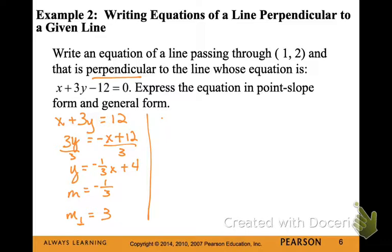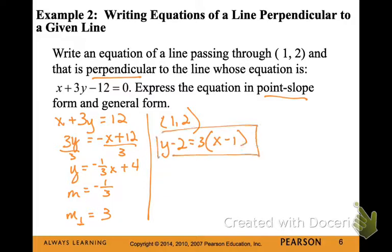Or I can just write that as positive 3. Now I have the slope, and I know that this will pass through the point (1, 2). So I can write my equation in point-slope form. And then I can take that point-slope form and simplify. So distribute the 3 and add the 2.